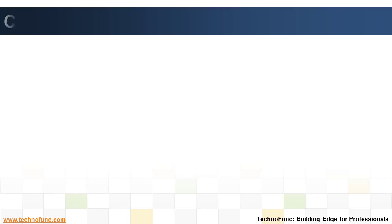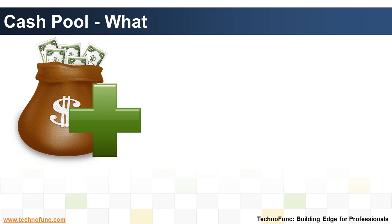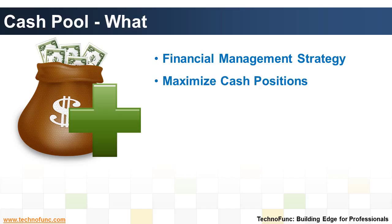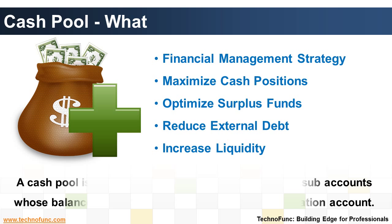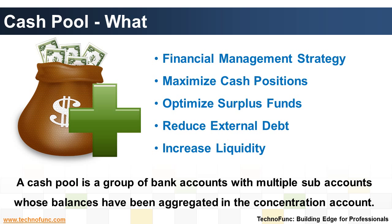Cash pooling is a financial management strategy that allows companies to maximize both their current credit and debit cash positions, to optimize the use of surplus funds of all subsidiaries in a group, in order to reduce external debt and increase available liquidity. A cash pool is a group of bank accounts with multiple sub-accounts whose balances have been aggregated in the concentration account for the purposes of optimizing interest paid or received and improving liquidity management.